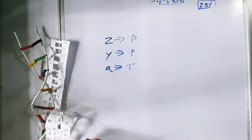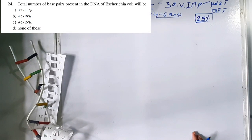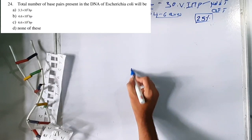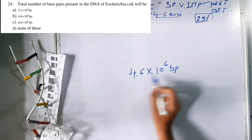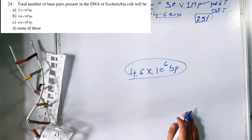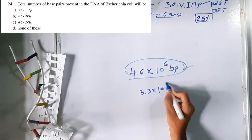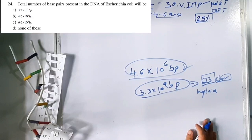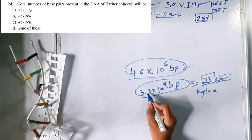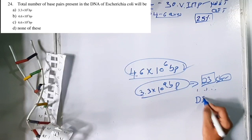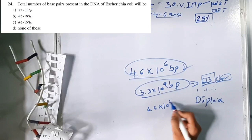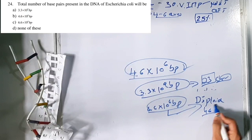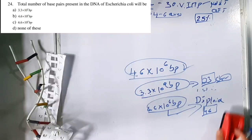Question 24: Total number of base pairs in the DNA of E. coli is 4.6 × 10⁶ base pairs. Option B is correct. In humans, the haploid genome (23 chromosomes) contains 3.3 × 10⁹ base pairs. The diploid genome (46 chromosomes) contains 6.6 × 10⁹ base pairs — simply double the haploid value.